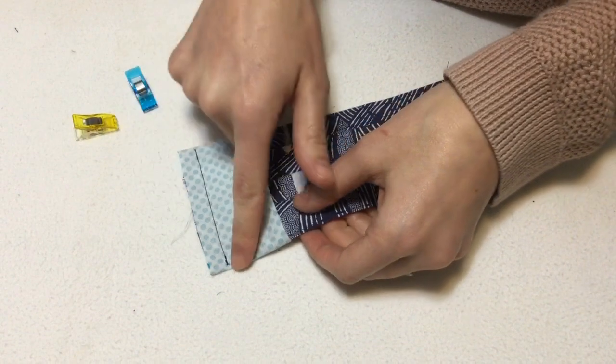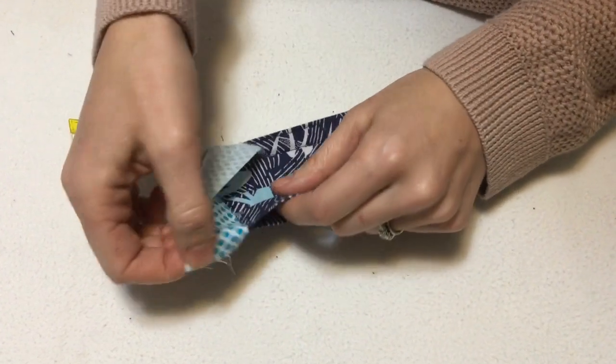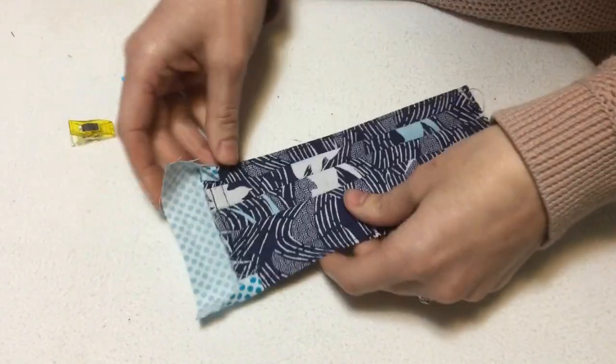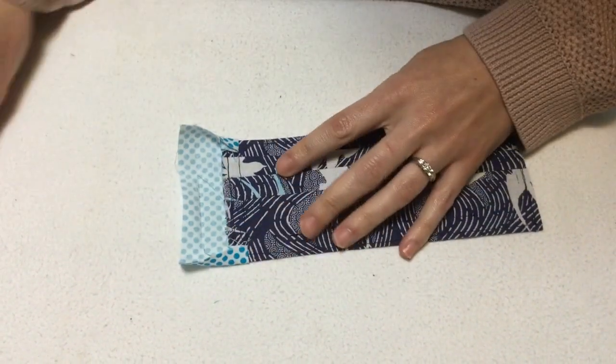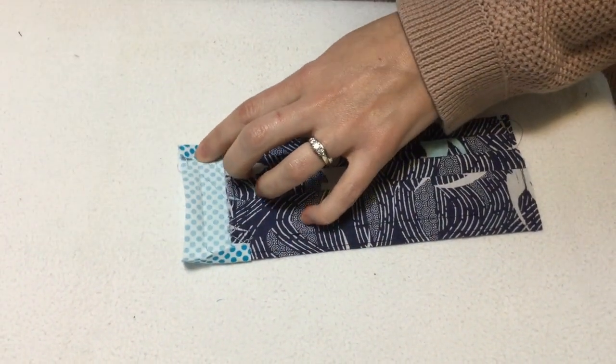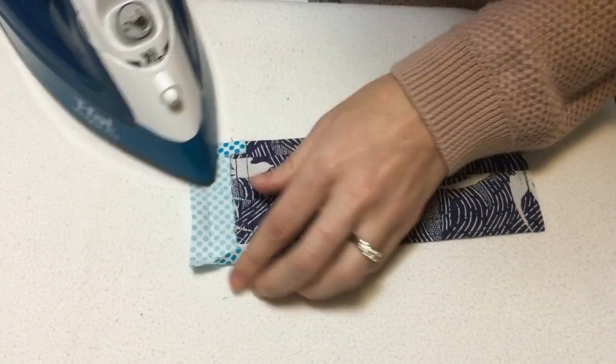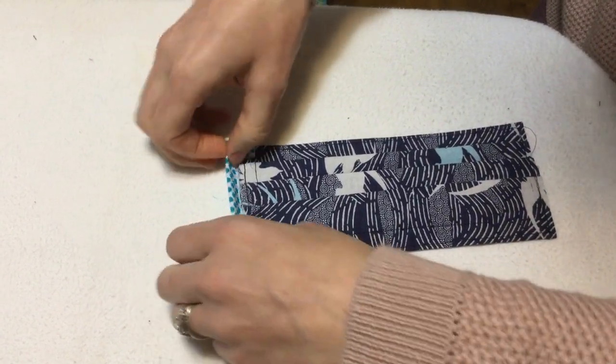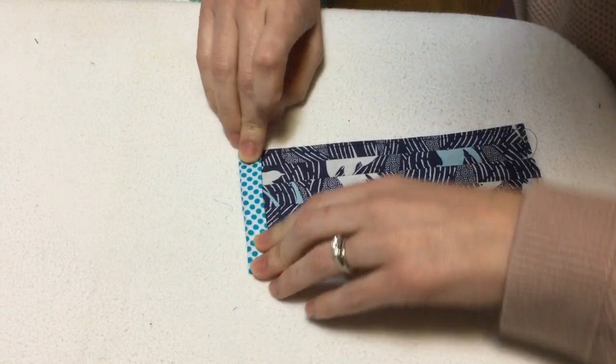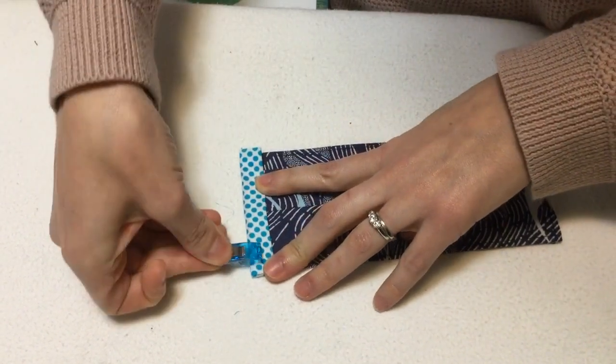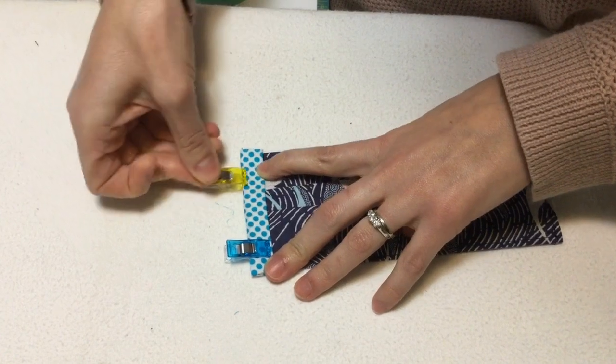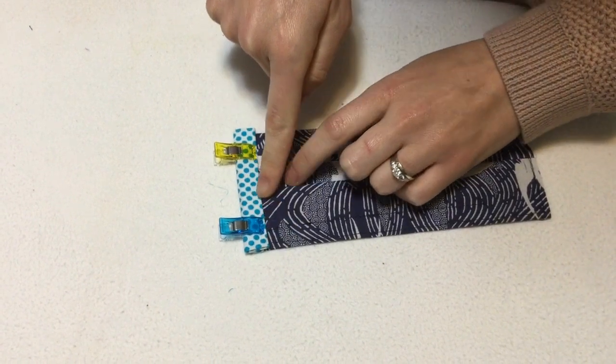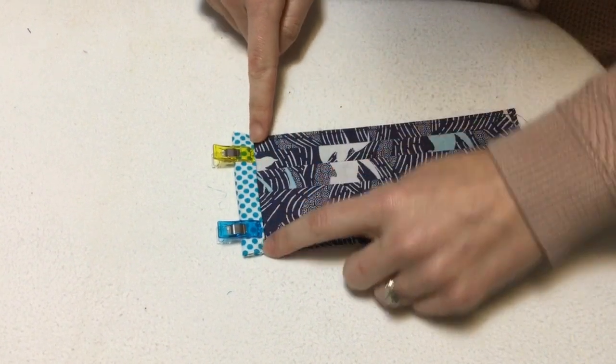Now that we've sewn the binding on, when you flip it around these edges are going to be nicely tucked around. The final thing we're going to do is press those edges. Now this part of the binding gets folded once and wrapped around to the front of the mask. You can use pins or these handy little wonder clips, and we'll sew that binding on to the mask.